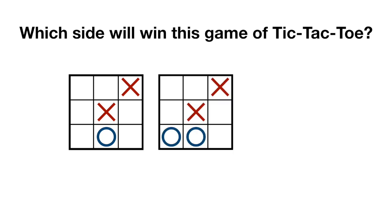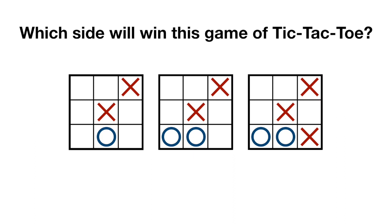O must play in the bottom left square in order to stop X from winning. X in turn now must play in the bottom right square to stop O from winning. Now, however, O is in trouble. X has two ways to win, a double threat. X will win this game.